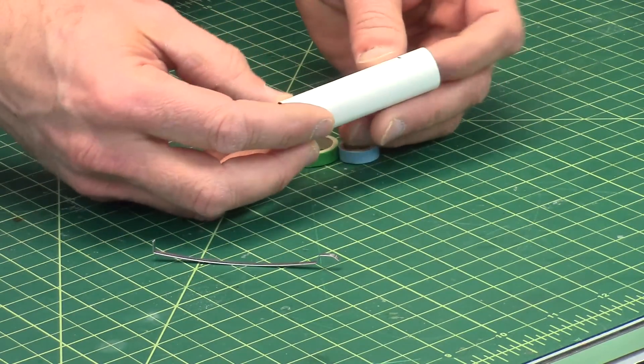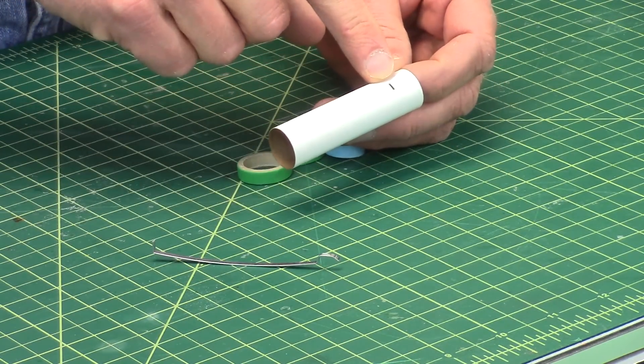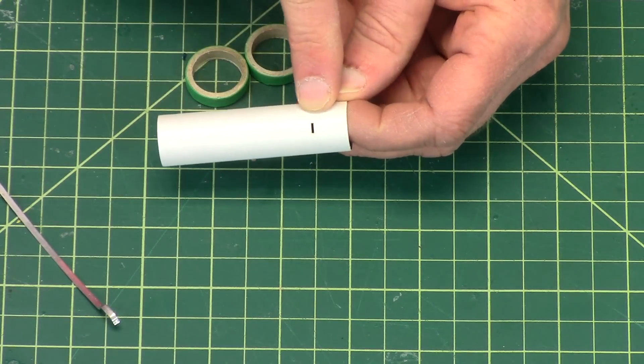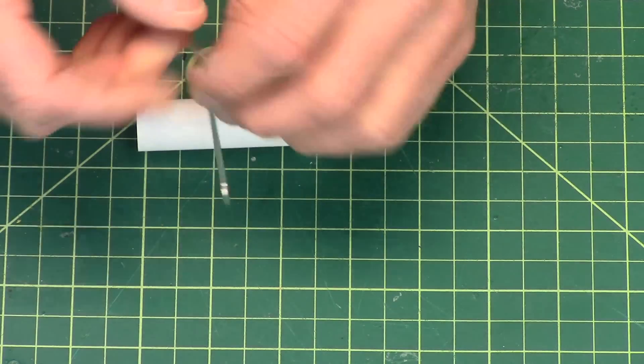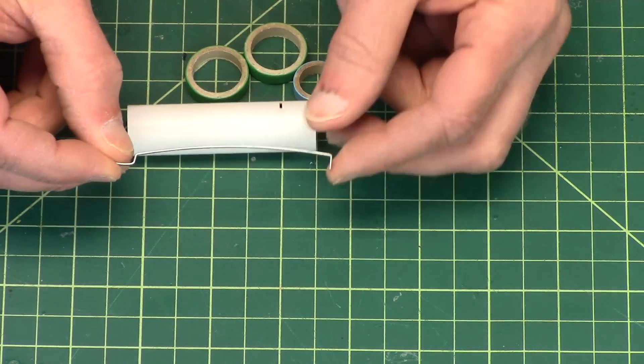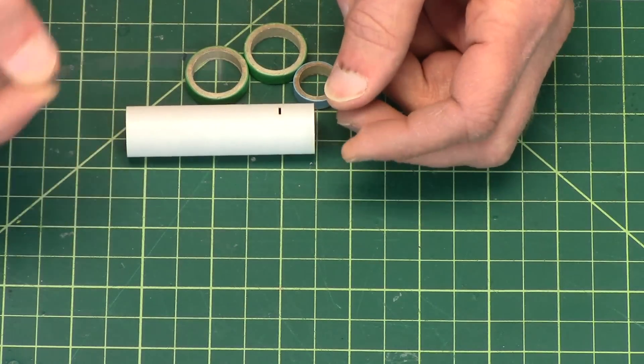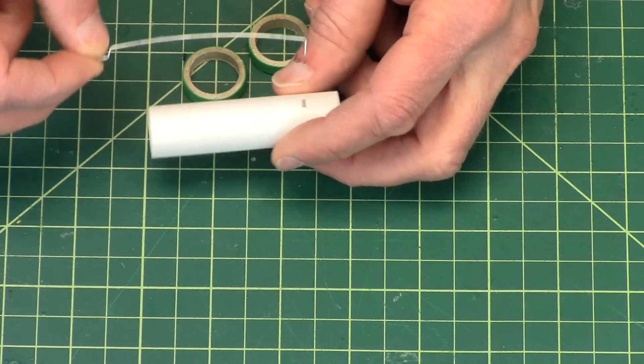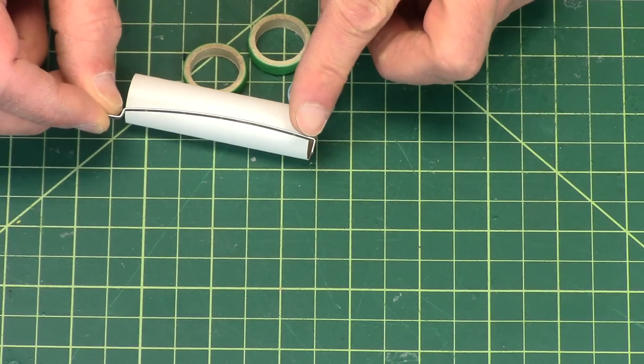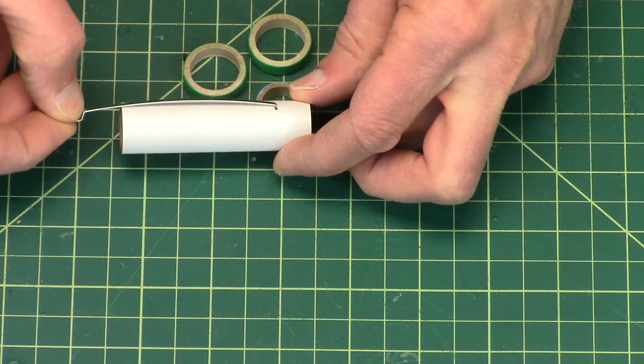This is the typical engine mount tube. You'll cut a slot into the tube and that's for the engine hook. The engine hook is what holds the engine in the tube.